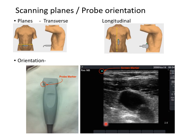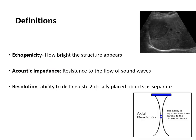On the screen you will see the dot appearing, representing the right of the patient in transverse plane or towards the head of the patient in longitudinal plane. This probe orientation is slightly different for echocardiography — it is the opposite.